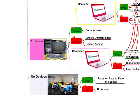One device, which is not normally something you see anymore — a pro is that you do have some access, versus the cons where you have very limited differentiation and very limited access. But I guess one device is better than no devices. Finally, there's no devices. Some people just say technology has a room and a place outside of the classroom, and in those classrooms it's a pro to have that face-to-face interaction with people. The cons is you're really having no access to the Internet. That's just some different types of technologies you can have in the classroom.